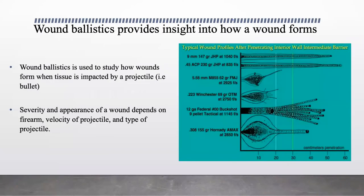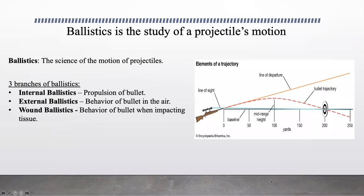Although guns are involved, ballistics actually refers to the study of a projectile's movement. A projectile can be pretty much anything, but the objects of interest in forensic science are typically bullets. Ballistics can be split into three categories: what occurs within a firearm, what happens after a bullet leaves a firearm, and what happens when a bullet hits a target, also known as wound ballistics.